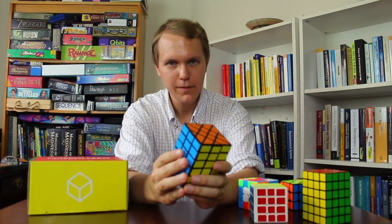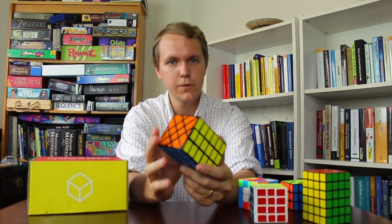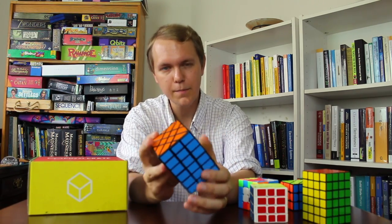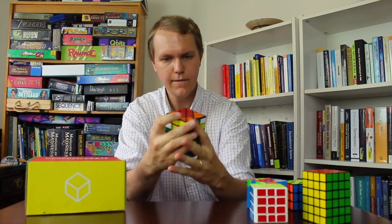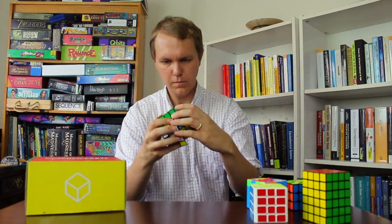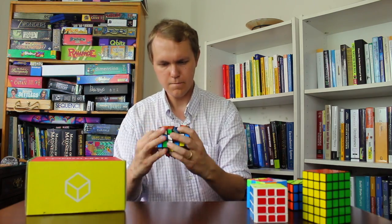So let's get started scrambling this thing. In order to get a good scramble, I'm going to scramble it with a bunch of moves that preserve its shape, and then I'm going to do a bunch of shape-shifting moves. The puzzle turns quite nicely for its size and shape. Usually it's a lot tougher to turn puzzles like this.